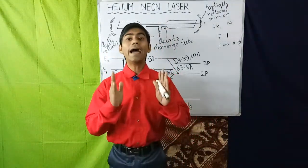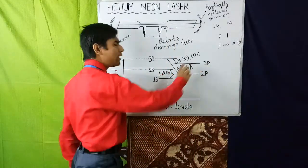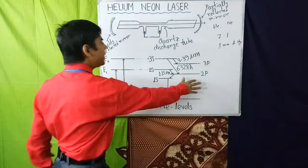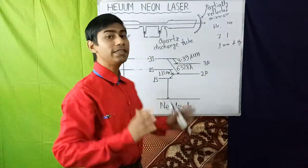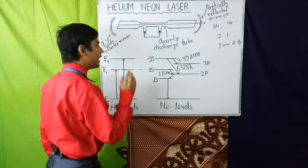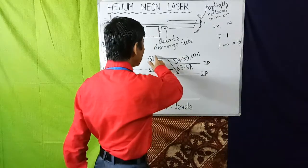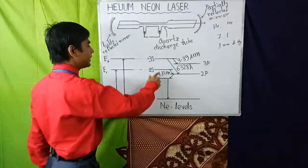Since 2P and 3P levels are very thinly populated, here population inversion can be achieved between 3S level to 3P level, 3S level to 2P level, and 2S level to 2P level.